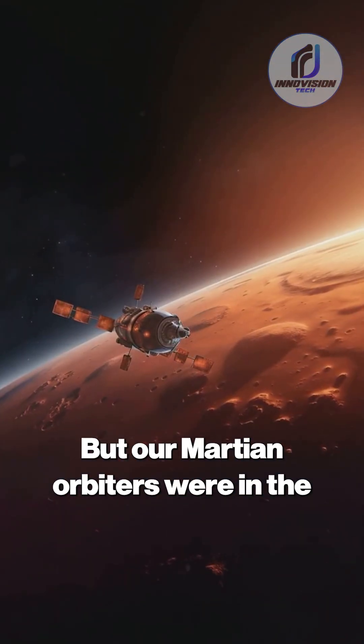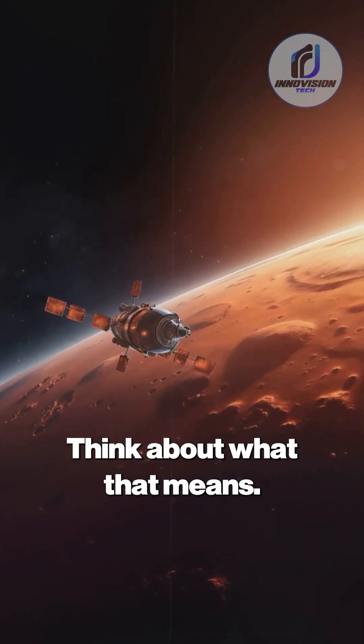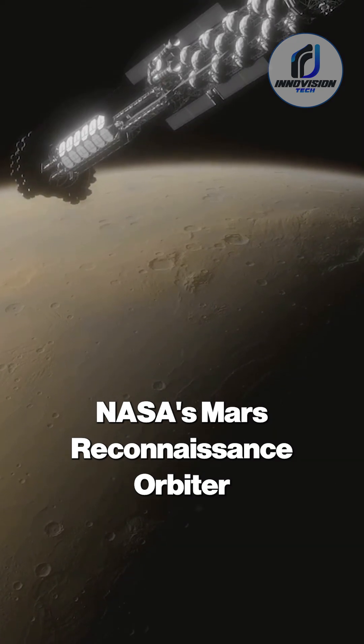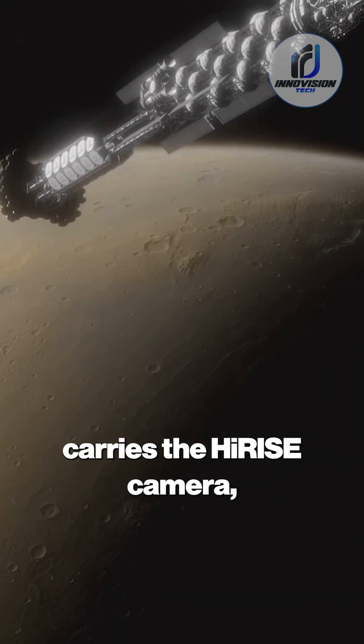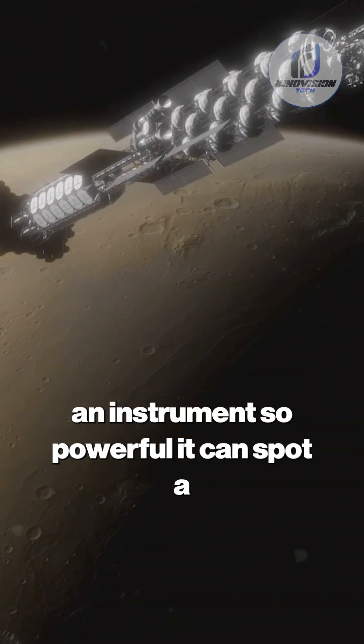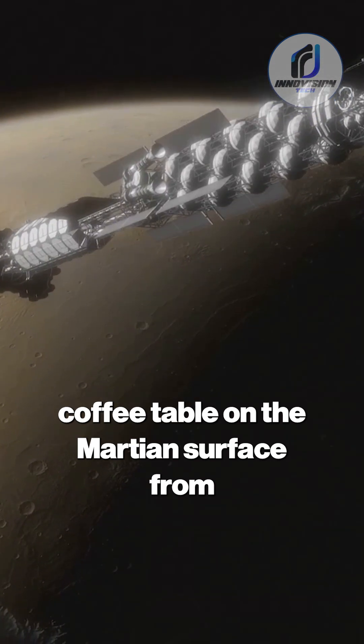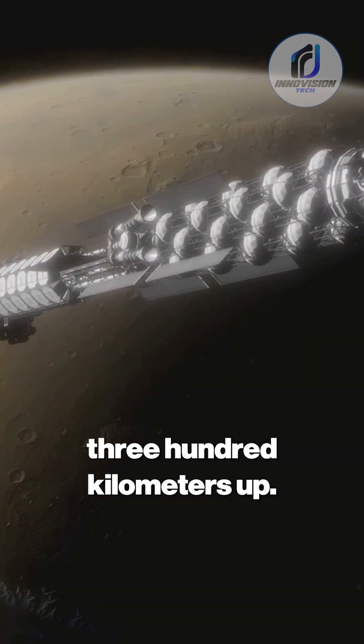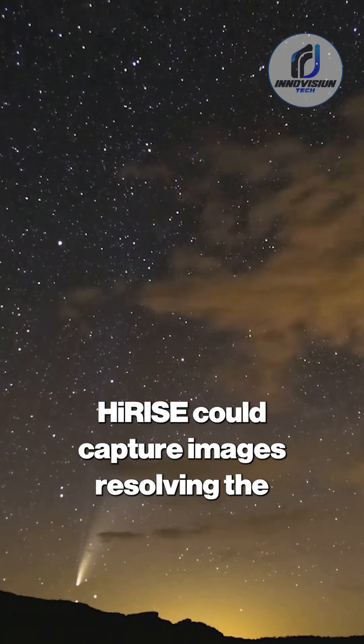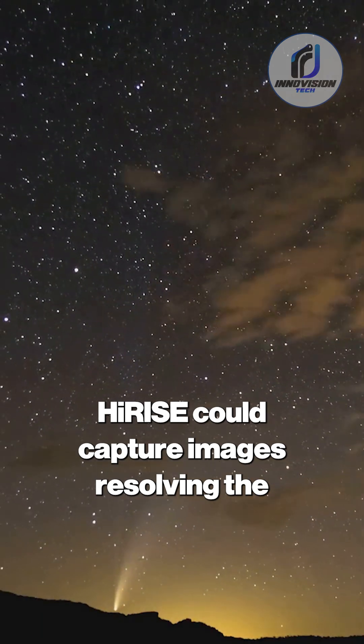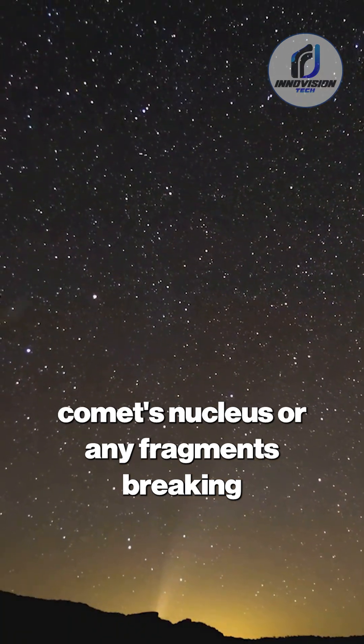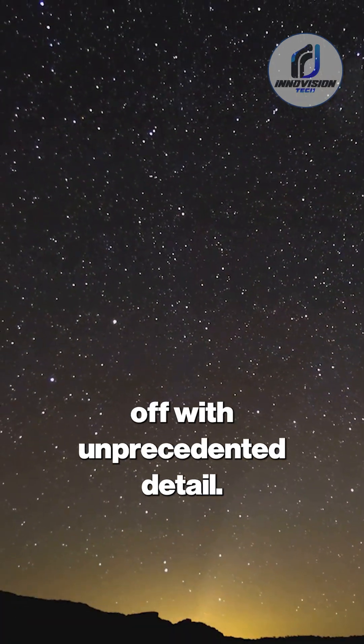But our Martian orbiters were in the perfect position. Think about what that means. NASA's Mars Reconnaissance Orbiter carries the HiRISE camera, an instrument so powerful it can spot a coffee table on the Martian surface from 300 kilometers up. In theory, HiRISE could capture images resolving the comet's nucleus or any fragments breaking off with unprecedented detail.